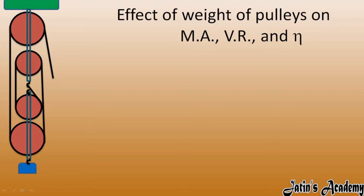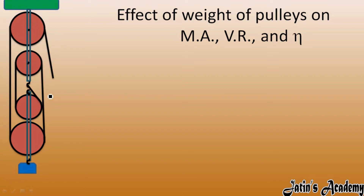Now let's see the effect of weight of pulleys on mechanical advantage, velocity ratio, and efficiency. In the previous derivation we have not considered the effect of the weights of the movable pulleys. We have two types of pulleys: fixed and movable. Fixed pulleys are fixed at one point — they are just rotating, not moving — so we are not considering the effect of their weight. But movable pulleys do have some weight, acting in the downward direction, as does the load.